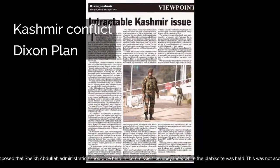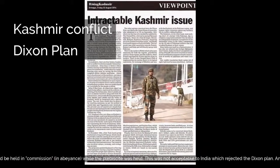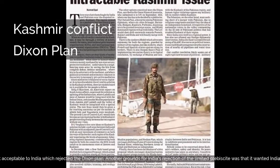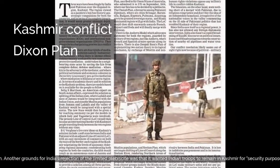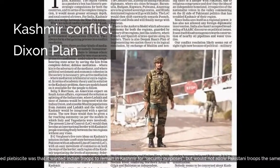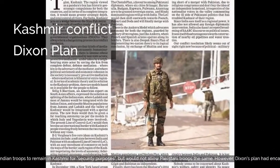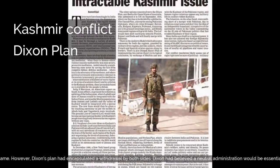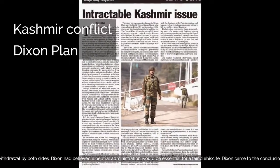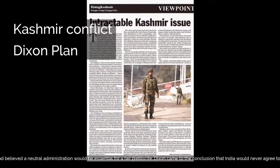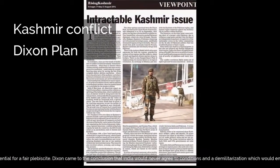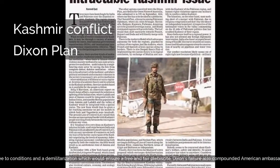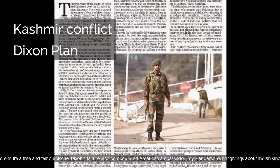Another ground for India's rejection of the limited plebiscite was that it wanted Indian troops to remain in Kashmir for security purposes but would not allow Pakistani troops the same. However, Dixon's plan had encapsulated a withdrawal by both sides. Dixon had believed a neutral administration would be essential for a fair plebiscite. Dixon came to the conclusion that India would never agree to conditions and a demilitarization which would ensure a free and fair plebiscite. Dixon's failure also compounded American Ambassador Loy Henderson's misgivings about Indian sincerity, and he advised the U.S. to maintain a distance from the Kashmir dispute and leave the matter for Commonwealth nations to intervene in.